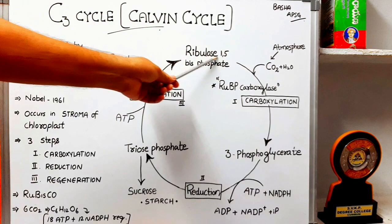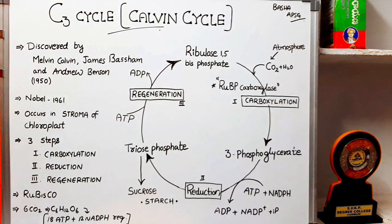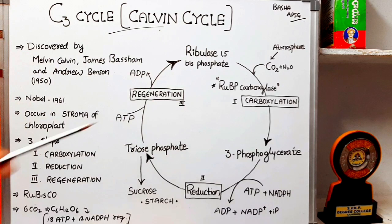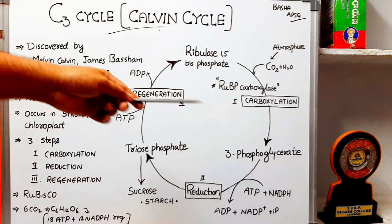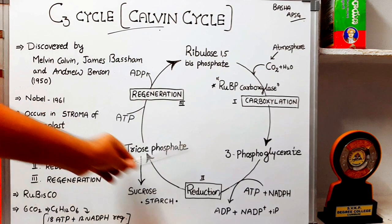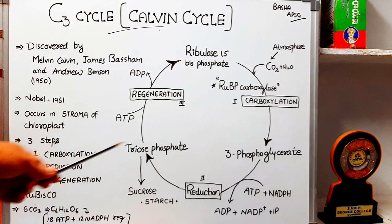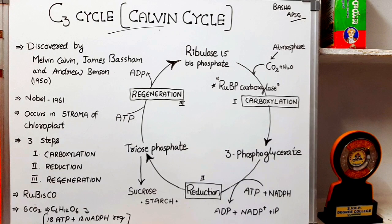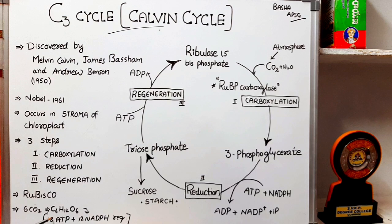For each carbon dioxide fixation, one cycle occurs. We know that a glucose molecule consists of 6 carbons — C6H12O6 — so to make one molecule of glucose, 6 turns of the cycle are required, one cycle per carbon. For each cycle, 2 ATP molecules and 2 NADPH molecules are used in reduction, plus 1 ATP in regeneration, totaling 3 ATP and 2 NADPH per cycle. For 6 cycles, that requires 18 ATP molecules and 12 NADPH molecules for the synthesis of one molecule of glucose.